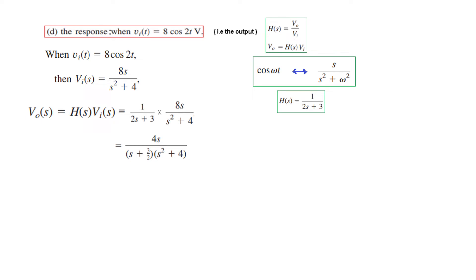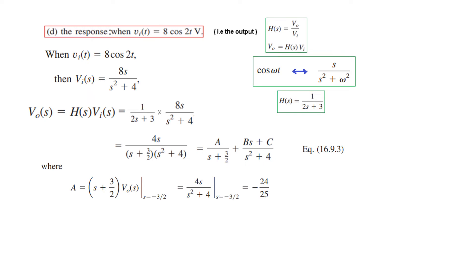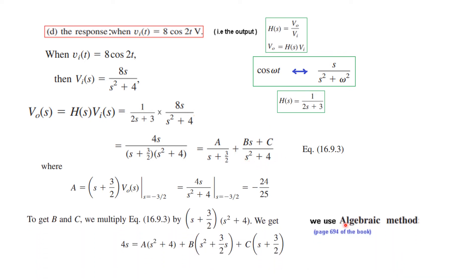Simplifying V_out(S), we see one simple linear factor (2S+3) and one quadratic factor (S²+4). For partial fractions, the decomposition is: A/(2S+3) + (BS+C)/(S²+4), because the quadratic factor requires a numerator of the form BS+C. We can find A directly by the residue method, but for B and C we must use the algebraic method.